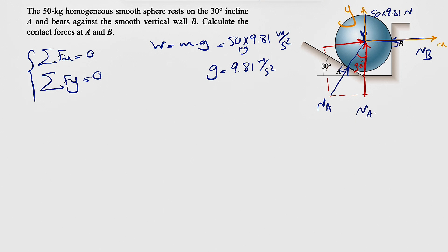Now it's easy to find the X and Y components. This will be NA cosine of 30 degrees, and the other one would be NA sine of 30 degrees.